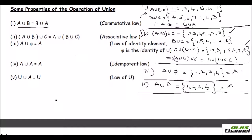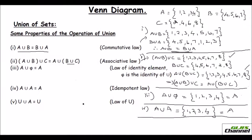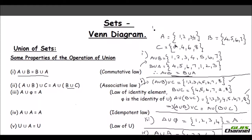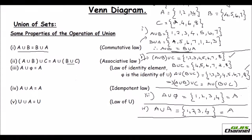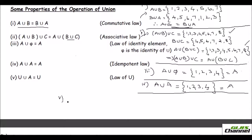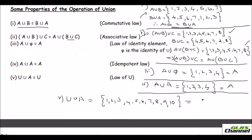Finally, the law of universal set. The universal set comprises all elements of the subsets, so let's say it is {1, 2, 3, 4, 5, 6, … 10}, which includes all of A, B, and C. The fifth law says universal set union A equals the universal set. When we write the universal set and then include A, all elements of A are already there, so we get nothing but the universal set.